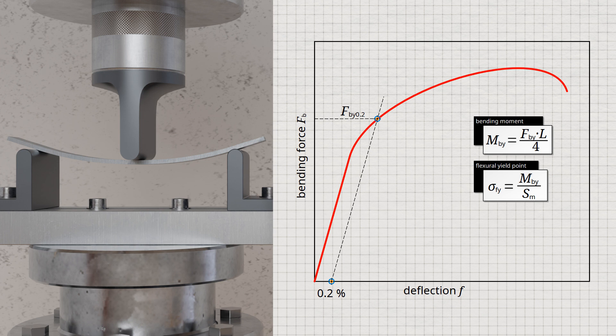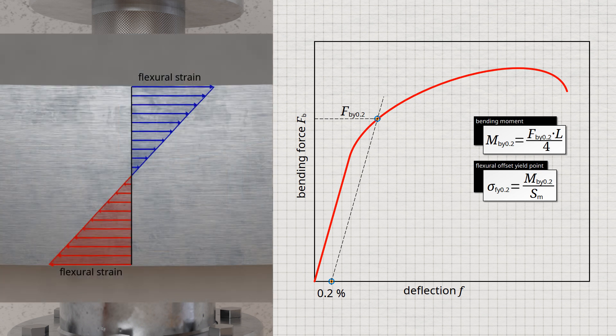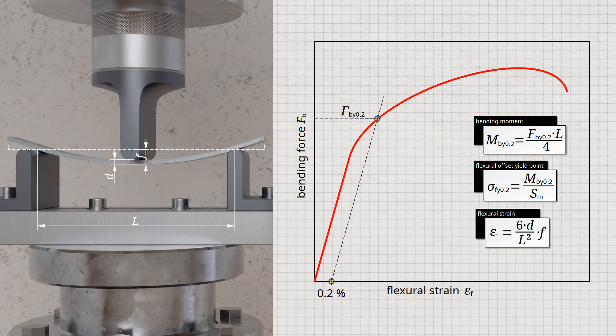Such an offset yield point is also calculated with the previously derived bending equation, although there is no longer a linear stress distribution, so this equation is actually no longer valid. Thus, the flexural offset yield strength is a fictitious stress value which does not correspond to the actual stress. In the given formula, Mby-0.2 denotes the bending moment at which a permanent deformation of 0.2% occurs at the point subjected to the highest stress — referring to the material surface at the point of maximum bending moment. This surface strain is also referred to as flexural strain epsilon-f, which is directly proportional to the deflection and determined using the shown formula, where d is the specimen thickness, l the distance between supports, and f the deflection.